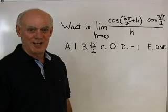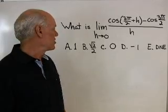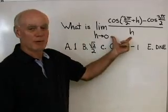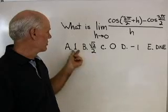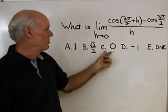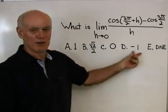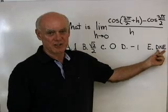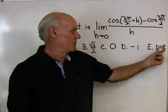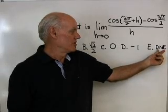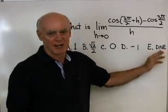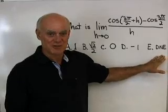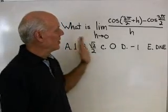Here we have a problem off the AP Calculus exam. What is this limit right here? Here are our choices: 1, square root of 2 over 2, 0, negative 1, and does not exist — which on the exam they would write out fully rather than using an abbreviation.